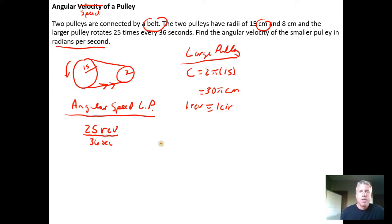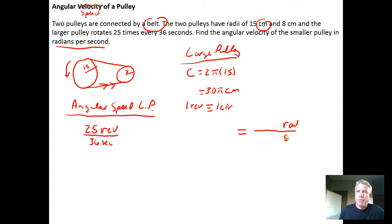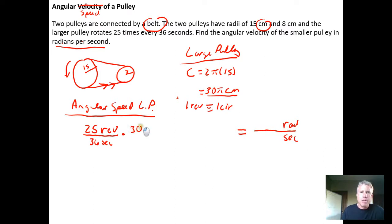Since the final answer needs to be in radians per second, we take the angular speed of the large pulley and convert it to a linear speed using the relationship that one revolution corresponds to 30π centimeters. The linear speed becomes 30π centimeters per revolution, and since revolutions cancel, we now have the linear speed of the belt in centimeters per second.